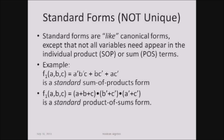Up to now we have seen canonical forms, where canonical forms can be of two types: canonical sum of products and canonical product of sums. Now standard forms are not similar to canonical forms. Standard forms are like canonical forms except that not all variables need appear in an individual product or sum term. It means every product term as well as sum term in the canonical form contains all the variables.